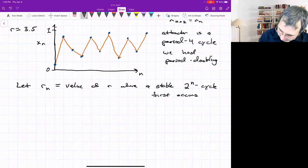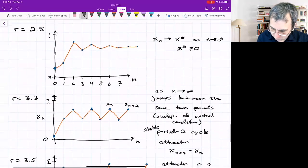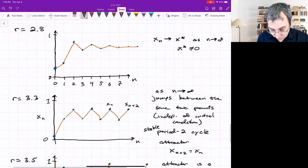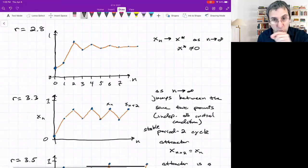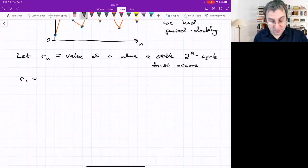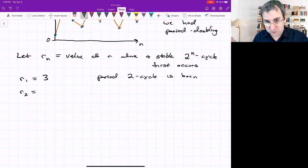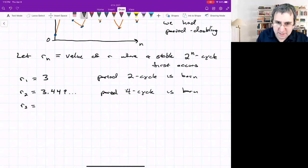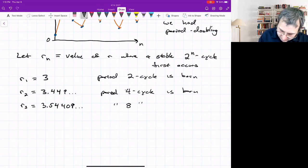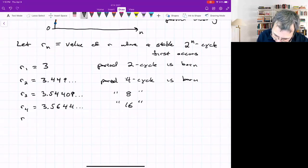For r=2.8, we didn't have one. It was just a fixed point. For r=3.3, we had a stable 2-cycle, meaning 2^1, so R_1 happens at 3. A period-2 cycle is born. R_2 occurs at 3.449, that's a four-cycle. R_3 is at 3.54409, a period-8 cycle. Another period doubling at 3.5644 and so on.